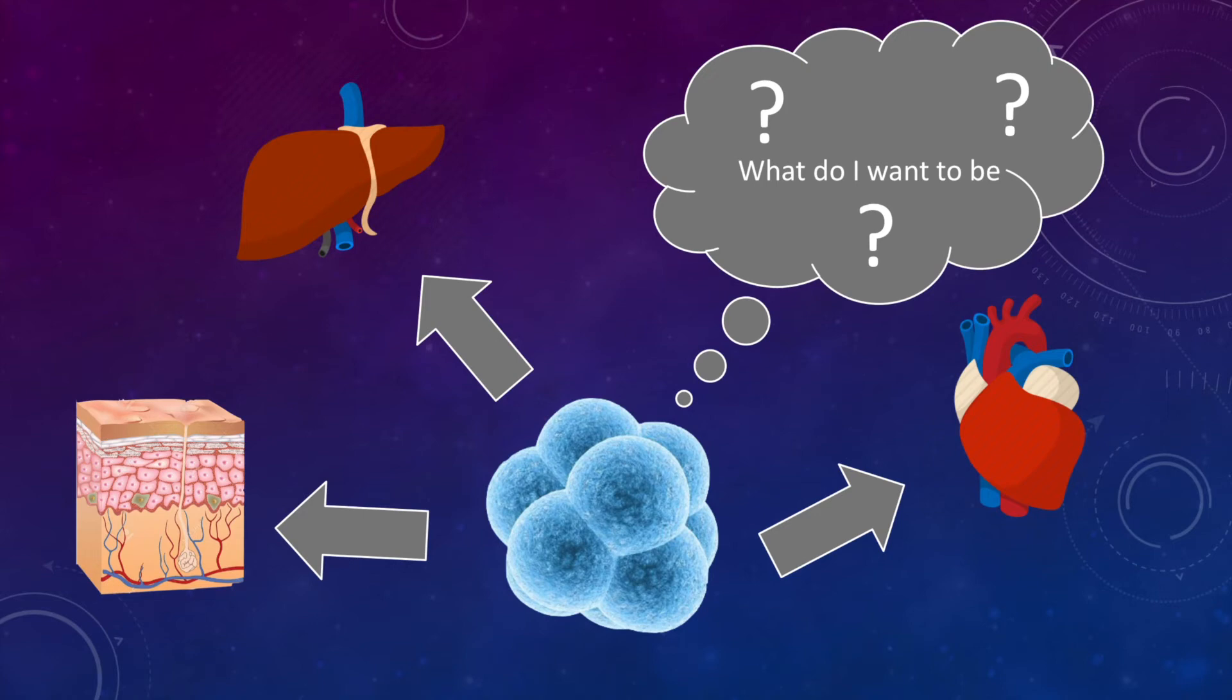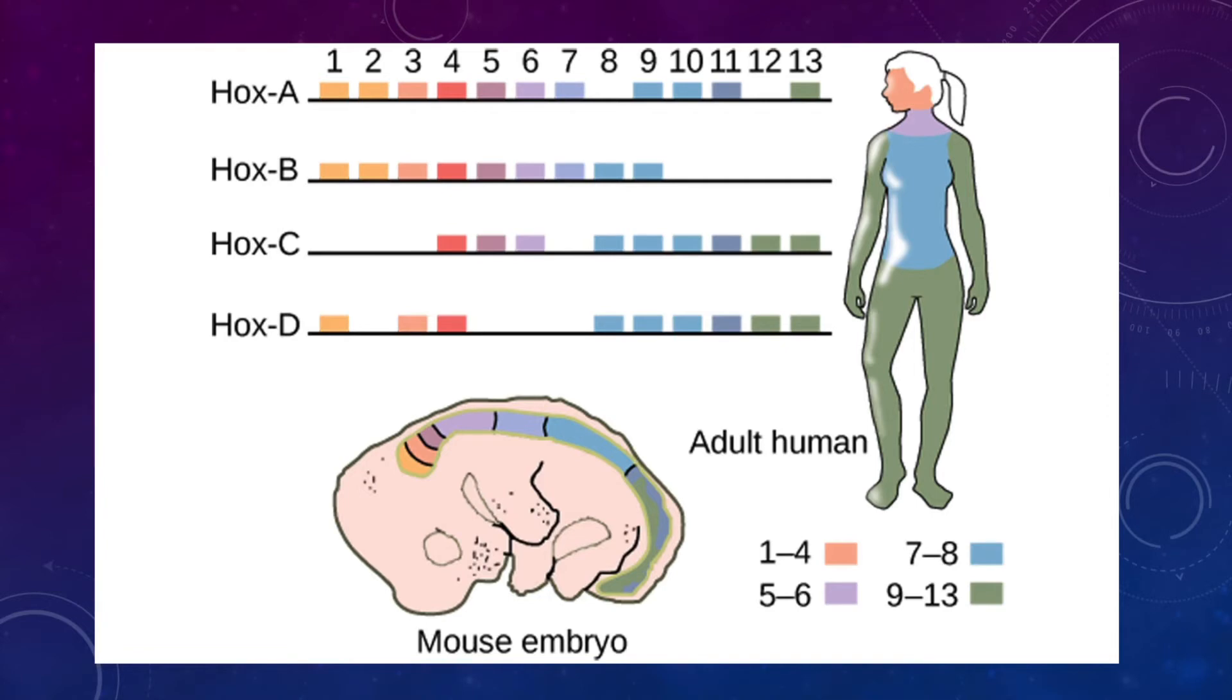For example, will they become a liver cell, a skin cell? HOX genes, which commit ES cells to adult tissue based on their relative location in an embryo, are common targets for PRC2, as are homeodomain transcription factors, evolutionarily conserved transcription factors that, again, specify ES cell fate.